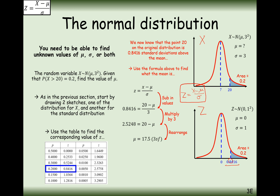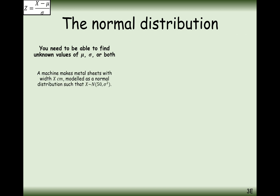We used the percentage points table and the transformation Z equals X minus mu over sigma to work out a missing mean value. But it doesn't have to be a missing mean — it could be a missing standard deviation as well.